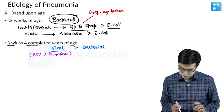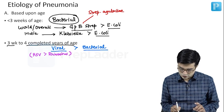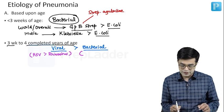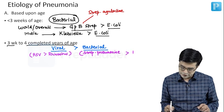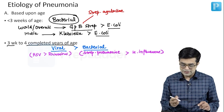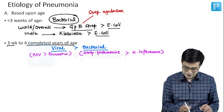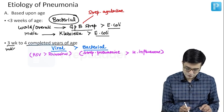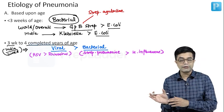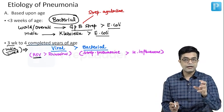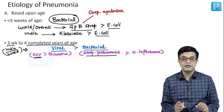For bacterial causes in this age group — three weeks to four completed years — the most common bacterial cause is Streptococcus pneumoniae, also called pneumococcus, followed by Haemophilus influenzae. This data is the same in both India and the world, so you can remember: viral more common than bacterial in this group; most common viral is RSV; most common bacterial is Streptococcus pneumoniae.